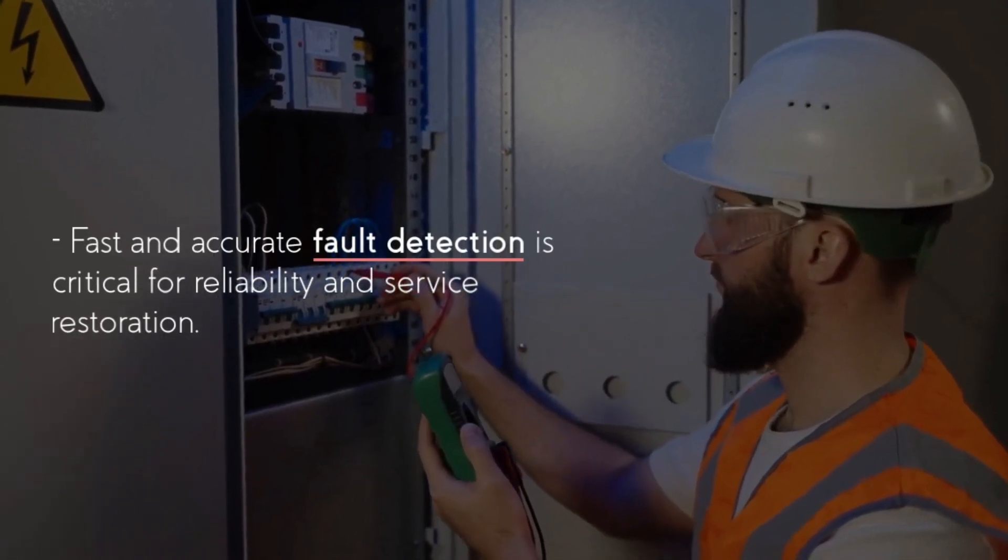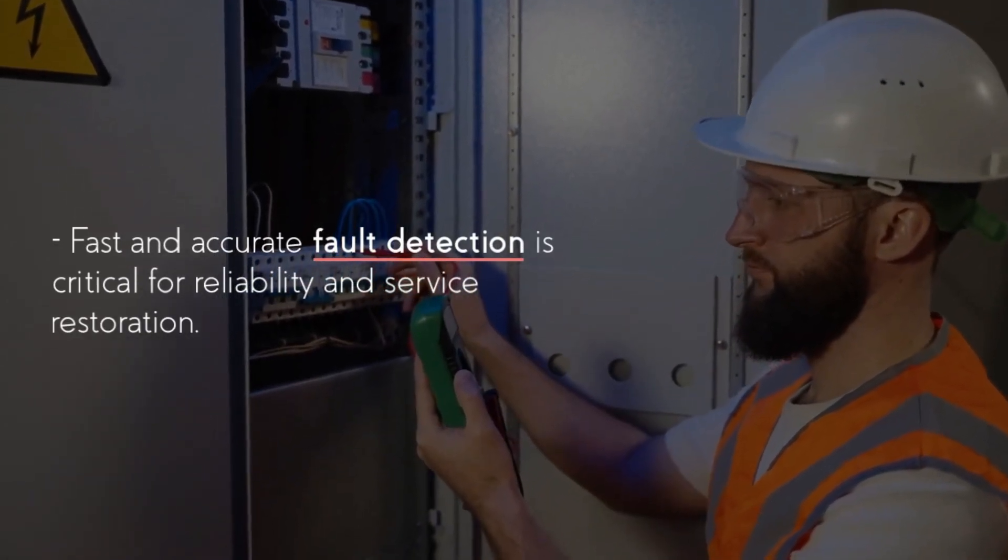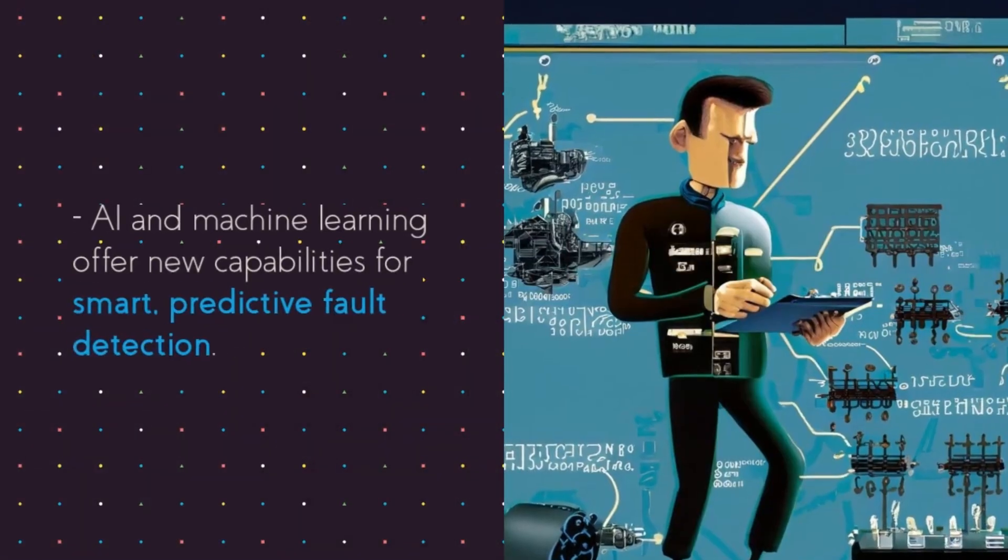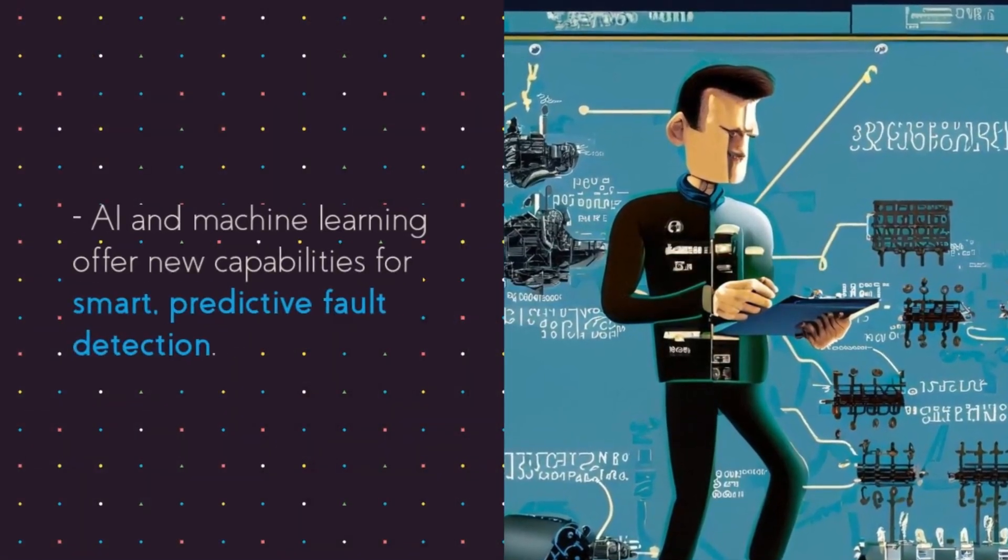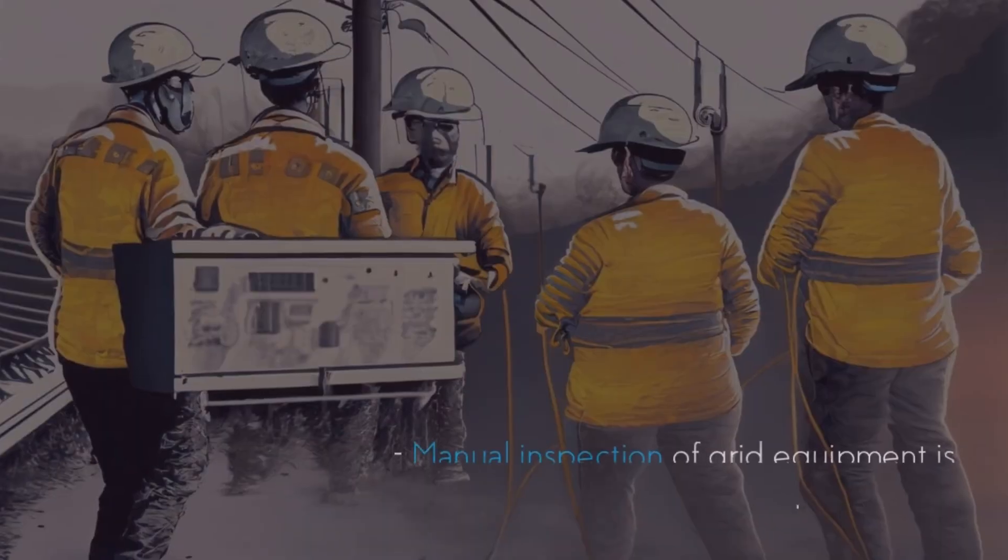Detecting faults quickly and accurately is key to keeping the power on and restoring it when it goes out. AI and machine learning give us new smart ways to predict faults before they happen.